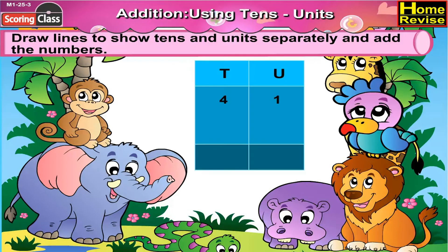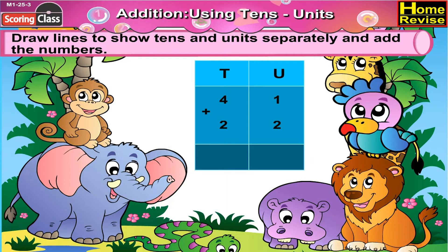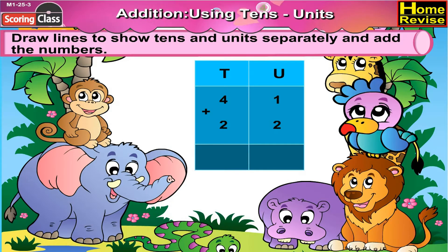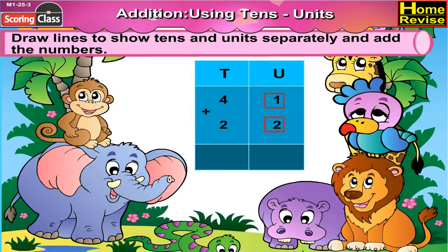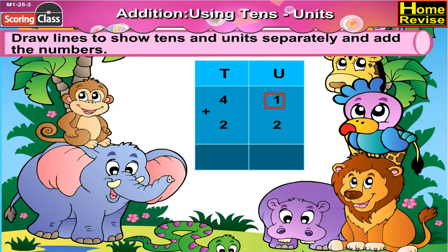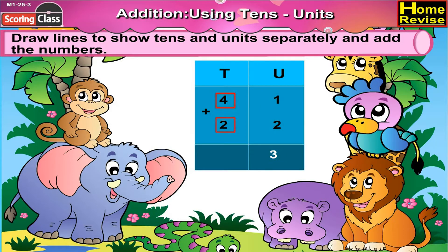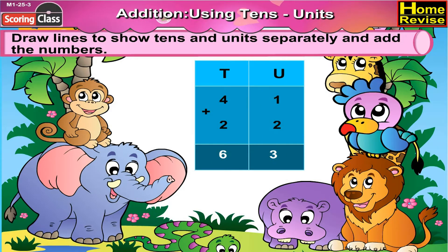Next is 41 plus 22. We will draw a line between 41 and 22. Write units above 1 and 2 and tenths above 4 and 2. So 1 plus 2 is 3, 4 plus 2 is 6. So 41 plus 22 is 63.